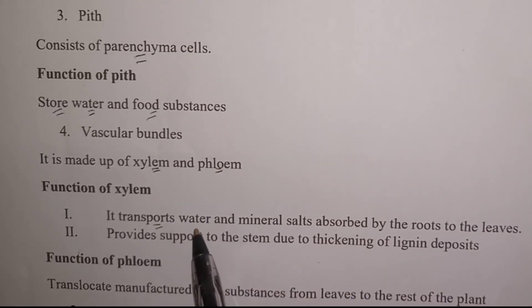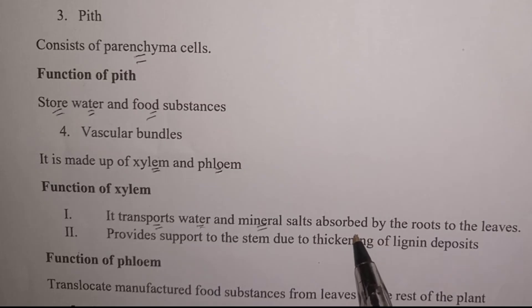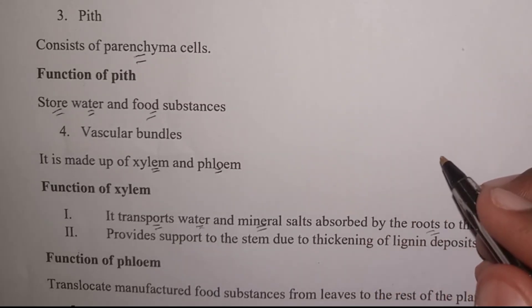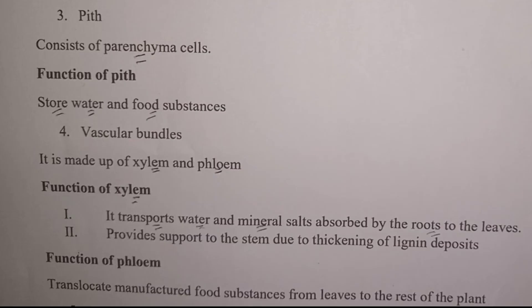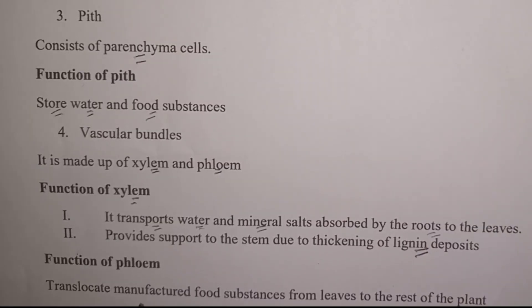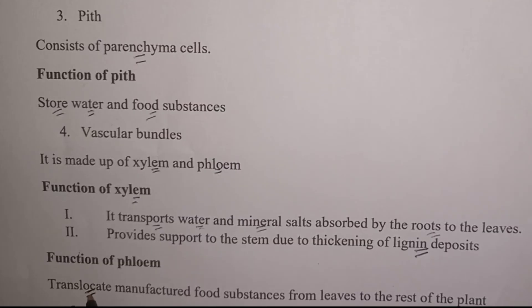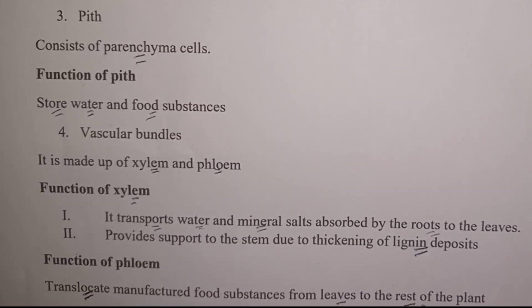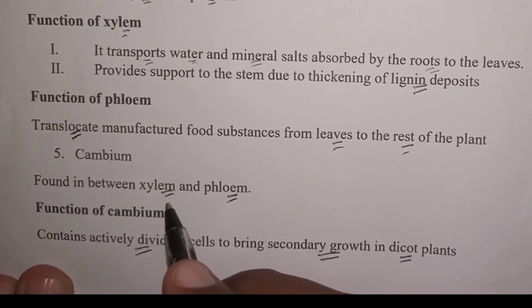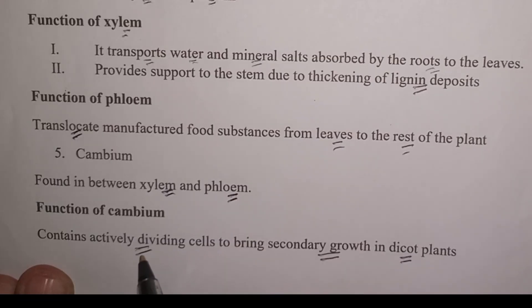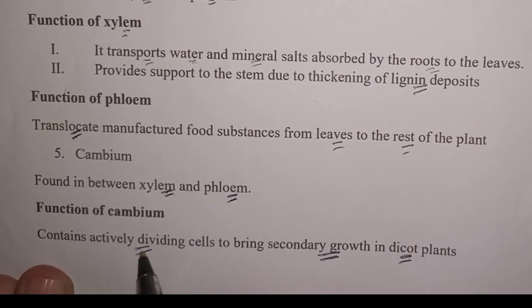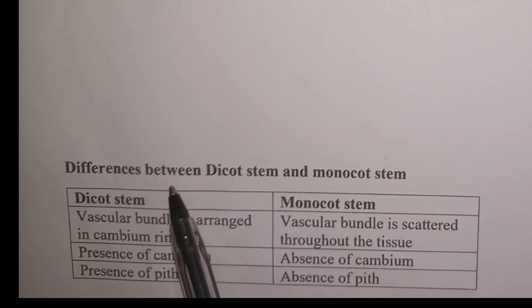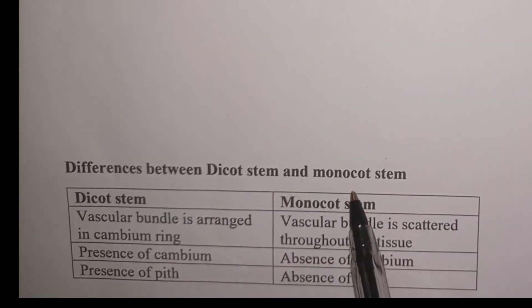The vascular bundle is made up of xylem and phloem. The function of the xylem is to transport water and mineral salts absorbed by the root hairs to the rest of the plant, and it also provides support to the stem due to deposition of lignin. The function of the phloem is to translocate — meaning it conducts manufactured food substances from the leaves to the rest of the plant. The cambium is a ring found between the xylem and phloem, and it is responsible for secondary growth in dicot plants because it contains actively dividing cells.